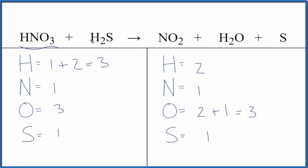Let's balance the equation for HNO3 plus H2S. This is nitric acid and this is hydrogen sulfide.